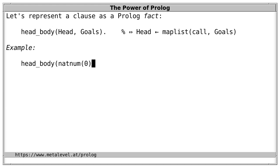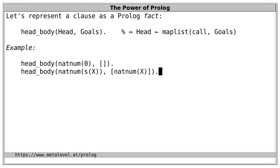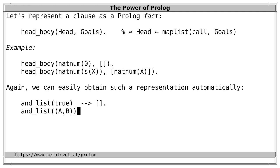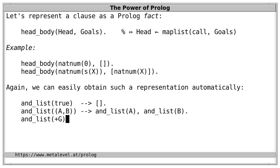For a definition of natNum, we write the empty conjunction — which is true — as the body for natNum(zero), and s(X) is a natural number with a list containing a single goal. We can easily obtain this representation automatically. The normal default representation of clause bodies is also called an 'and-list', because it denotes a conjunction. We can relate this to a list using a DCG: true corresponds to the empty list, a conjunction corresponds to a list comprising the goals of both conjuncts, and a standalone goal +(G) corresponds to a list with a single element G.